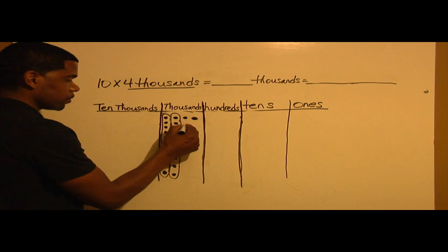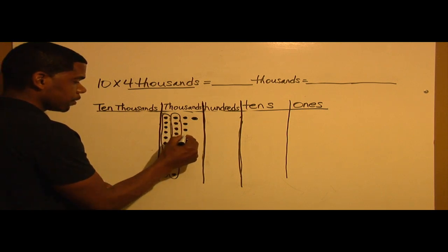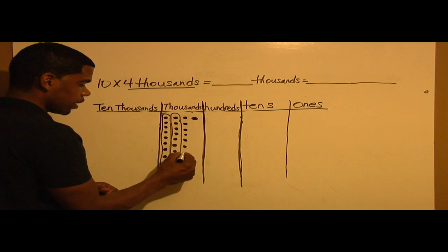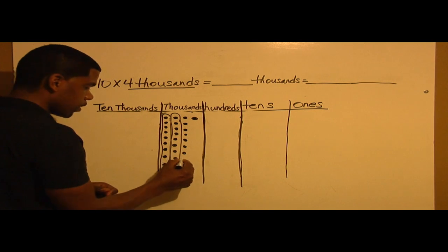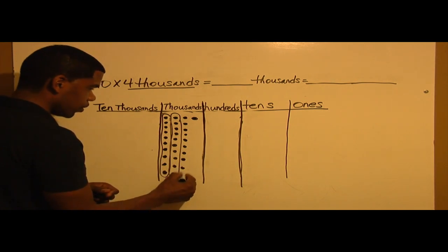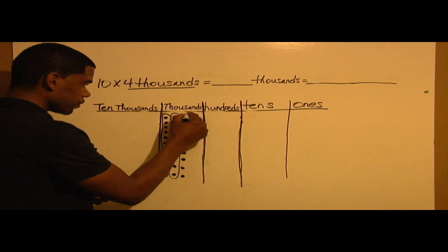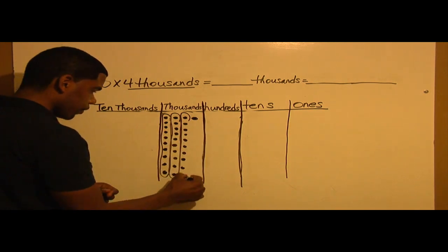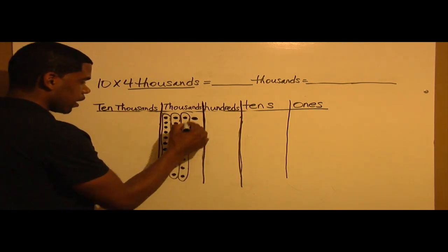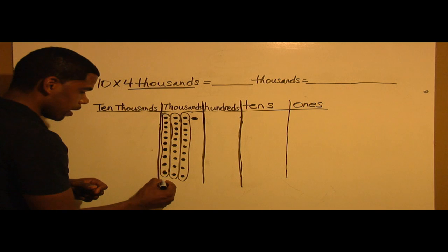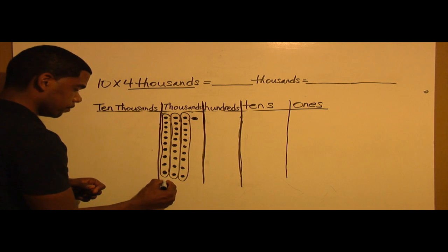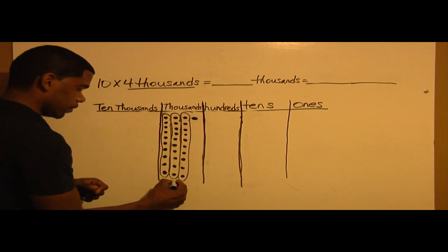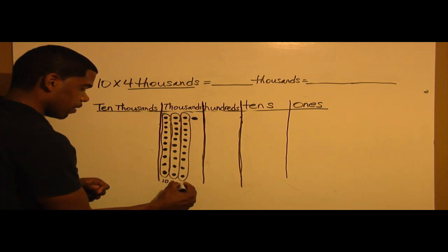1, 2, 3, 4, 5, 6, 7, 8, 9, 10. I have 3 groups of 1,000, so I have 10,000, 20,000, 30,000.